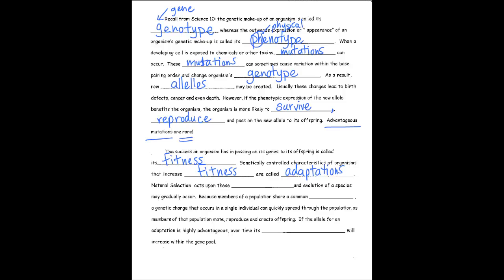Genetically controlled characteristics of organisms that increase fitness are called adaptations. Natural selection acts upon these adaptations, and evolution of a species may gradually occur.